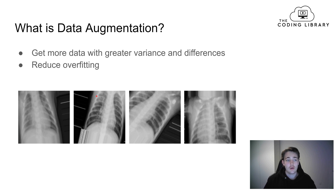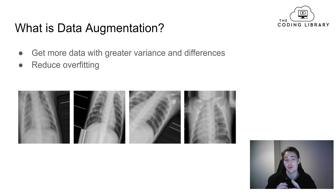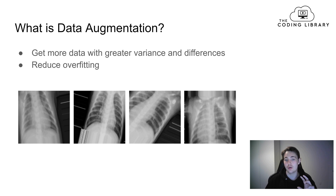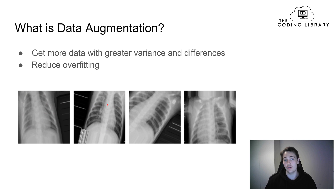So what is data augmentation? Data augmentation is when we augment the images we have in our dataset. We apply different kinds of changes to get more data with greater variance and differences. We change our images - it could be rotating or flipping our image to get more samples from the same image. We can flip on both the vertical and the horizontal axis, and we can also rotate our image to get more images.